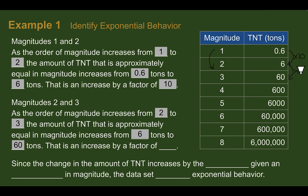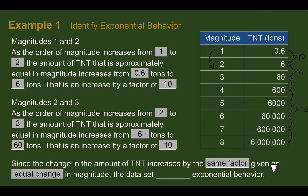If this is exponential behavior, we should see that every time we go up one magnitude, we also multiply by 10. From magnitude two to three, it went from six to 60 — yes, that is also increasing by a factor of 10. In fact, every magnitude increase goes up by a factor of 10 more. Since this increases by the same factor given an equal change in magnitude, this set does display exponential behavior. To confirm it's not linear, from six to 60 is an increase of 54, but the next step went up by 540 — since those are not the same addition, this is not linear.